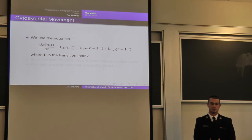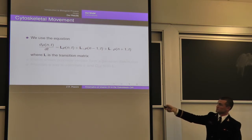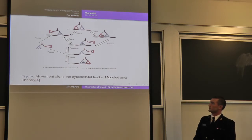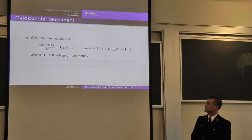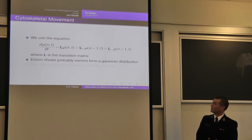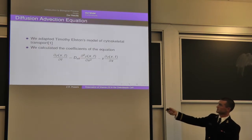Shastri uses a Markov process to determine the probability of motor proteins being in certain places along the track. L is the transition matrix between each position — positions 1 through 7 — giving a 6-by-6 transition matrix, since position 7 maps back to position 1. Rho is the probability matrix of the location of the motor protein along the cytoskeletal tract. Elston shows that the probability vectors form a Gaussian distribution for position along the cytoskeletal tract, and he provides a way to calculate the two coefficients we're interested in from the transition matrix, which consists of the K values.